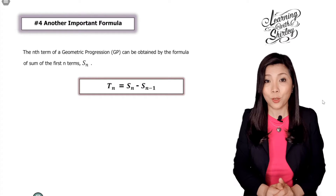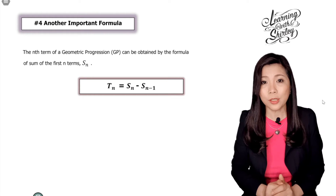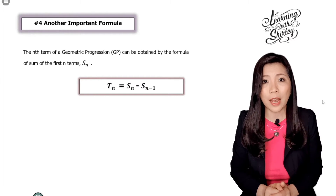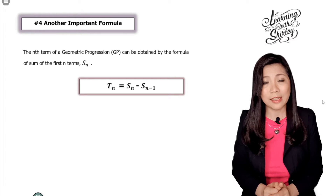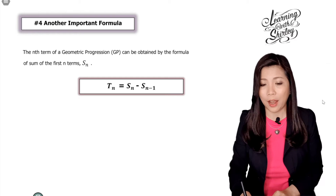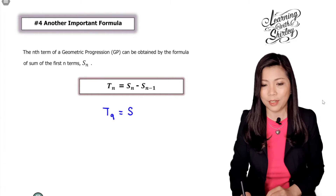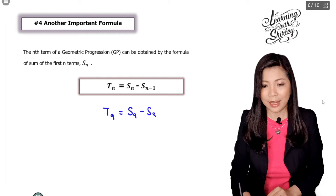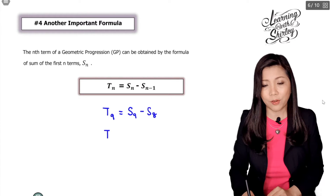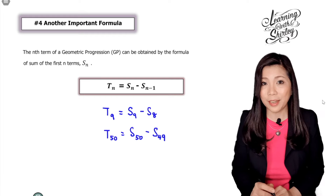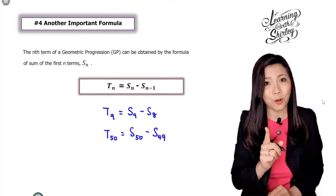There's another important formula: to find tn when a and r are not given but the Sn formula is provided. We use the formula: tn equals Sn minus Sn minus 1. For example, to find t9, substitute 9 into the Sn formula and compute S9 minus S8. To find t50, compute S50 minus S49. Remember this formula when Sn is given instead of a and r.